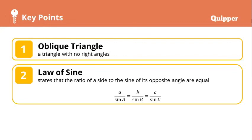Some key points. Again, oblique triangles are triangles with no right angles, and we have this law of sine which states that the ratio of a side to the sine of its opposite angle are equal given the formula.